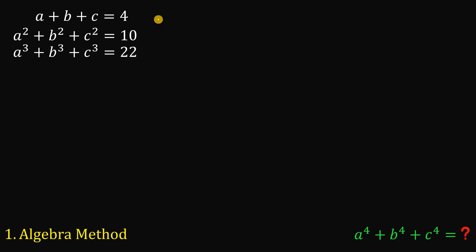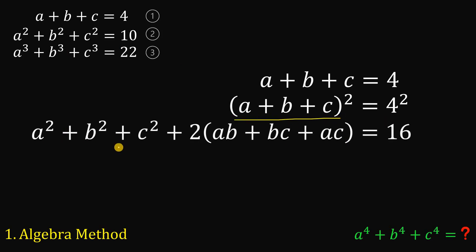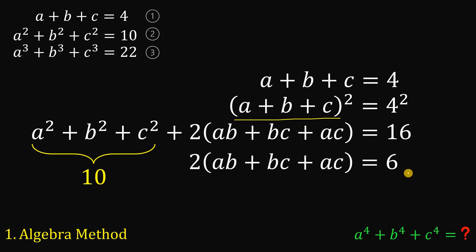Let's call the first equation equation one, the second equation two, and the third equation three. Starting with equation one, let's square it, because squaring it may allow us to use the second equation. Expanding the left-hand side gives a squared plus b squared plus c squared plus 2 times (ab plus bc plus ac) equals 16. We know from equation two that a squared plus b squared plus c squared equals 10, so 2(ab plus bc plus ac) equals 6, and therefore ab plus bc plus ac equals 3. We'll call this equation four.